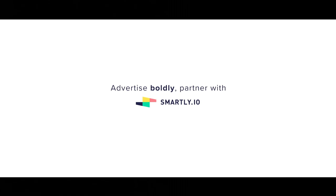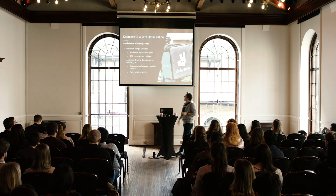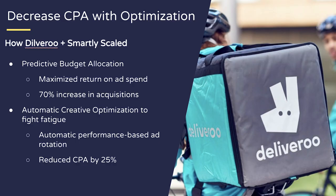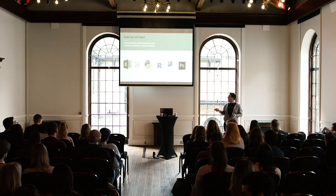Some of the features Deliveroo used include predicted budget allocation and automatic creative optimization, which changes your ads around randomly to see what performs best over time. They were able to get strong results by integrating many of these features.